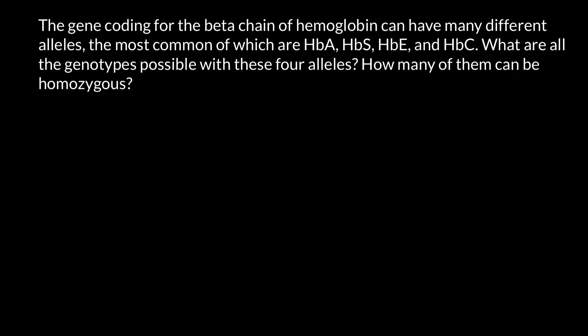Hello and welcome to Nikolai's genetics lessons. Today's problem is: the gene coding for the beta chain of hemoglobin can have many different alleles, the most common of which are HbA, HbS, HbE, and HbC. What are all the genotypes possible with these four alleles?